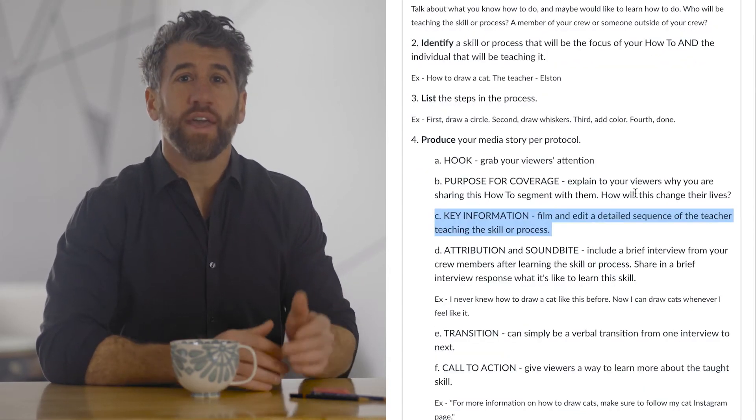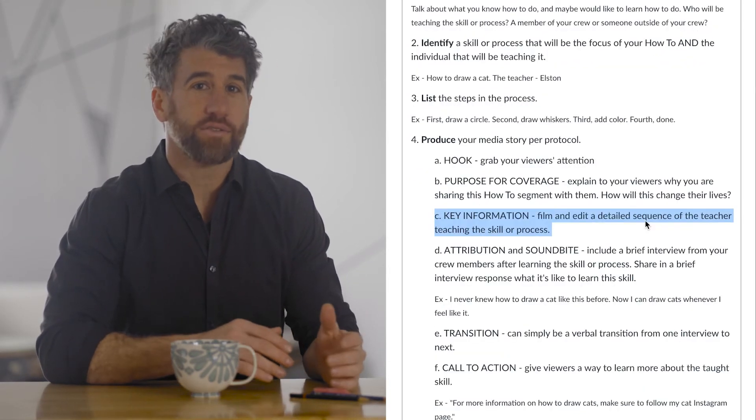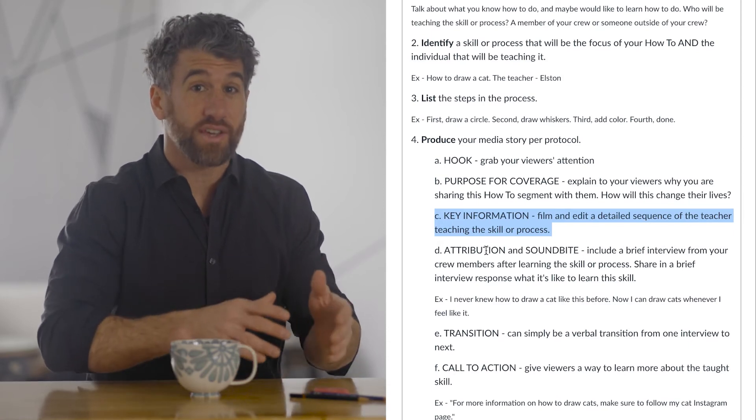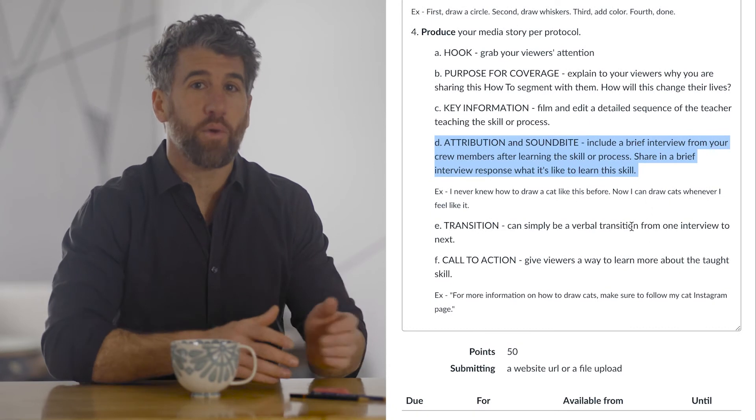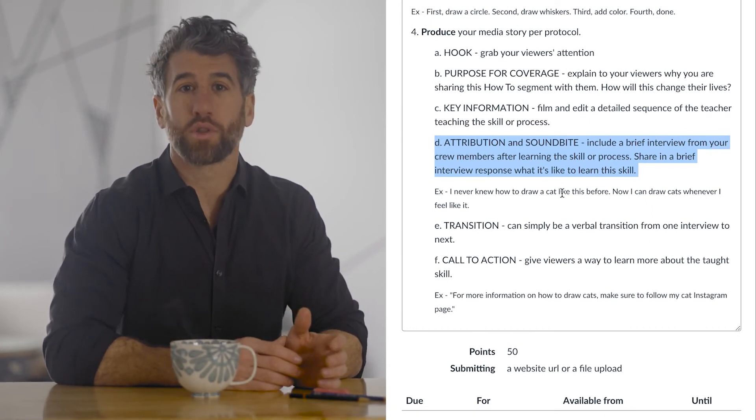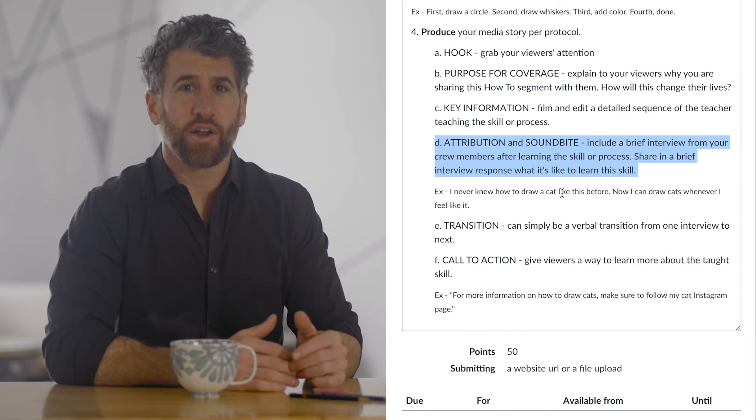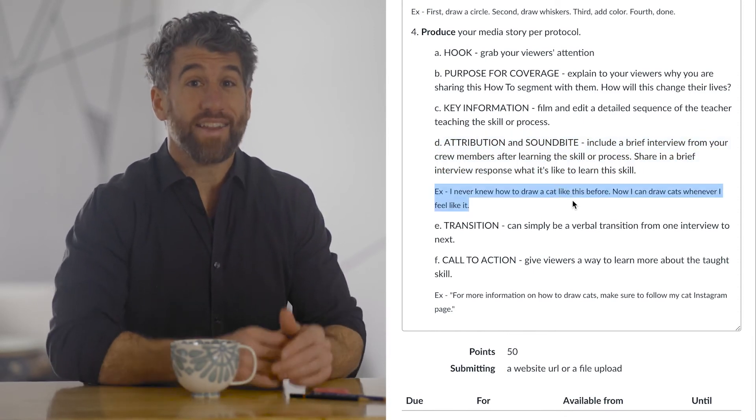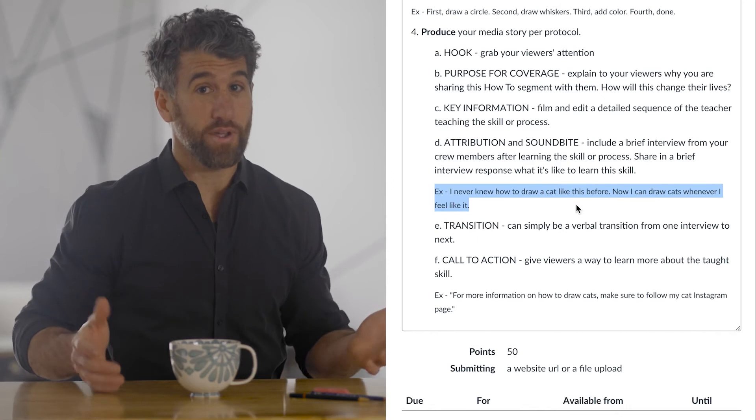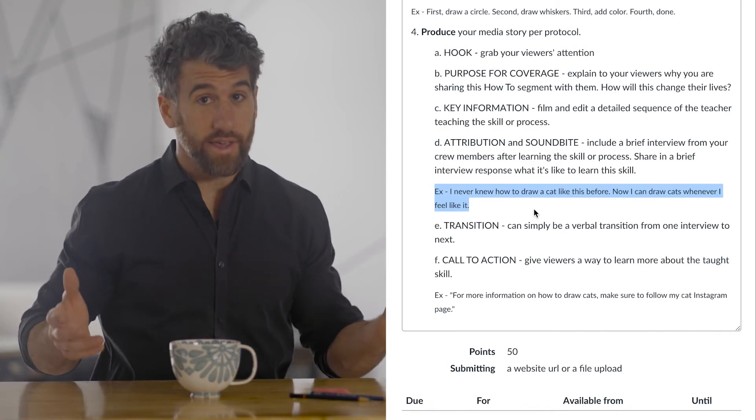C, key information. Here is where you will film and edit a detailed sequence of the teacher teaching the skill or process. D, your attribution and soundbite will consist of a brief interview from your crew members who are learning the skill or process. Share in a brief interview response what it's like to learn this skill. For example, I never knew how to draw a cat like this before. Now I can draw cats whenever I feel like it.